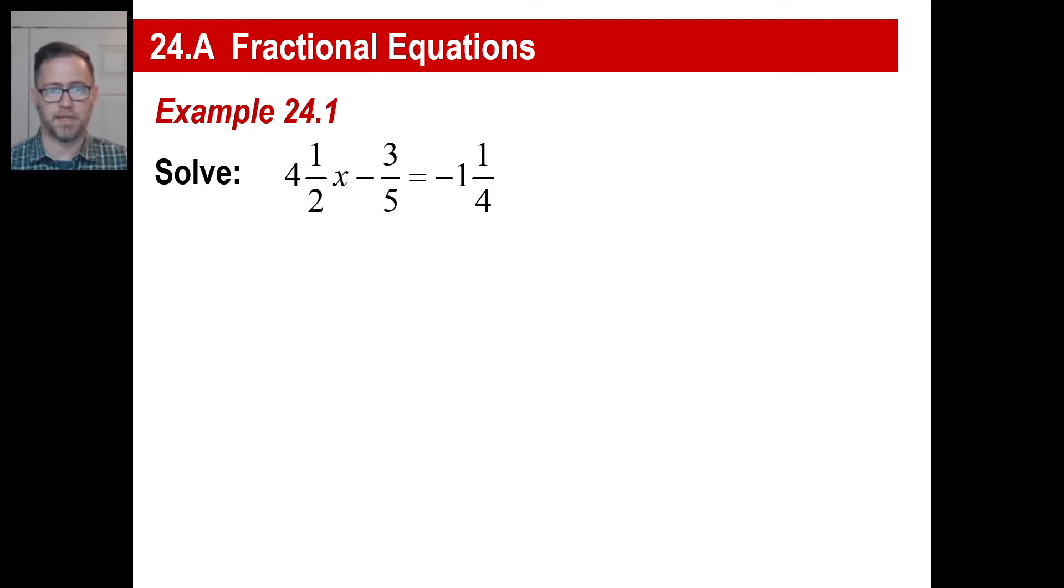All we need to do is, first off, let's make all these into improper fractions so we don't have mixed numbers. So four and a half x, we're going to rewrite that as nine halves x. Minus three-fifths, that's good the way it is, equals negative five-fourths. What we can do is, again, we can take all of this stuff and just multiply all the way through by the common denominator. Well, what do two and five and four all go into? And the answer you should probably know is 20. So I'm just going to multiply the entire thing by 20 over one.